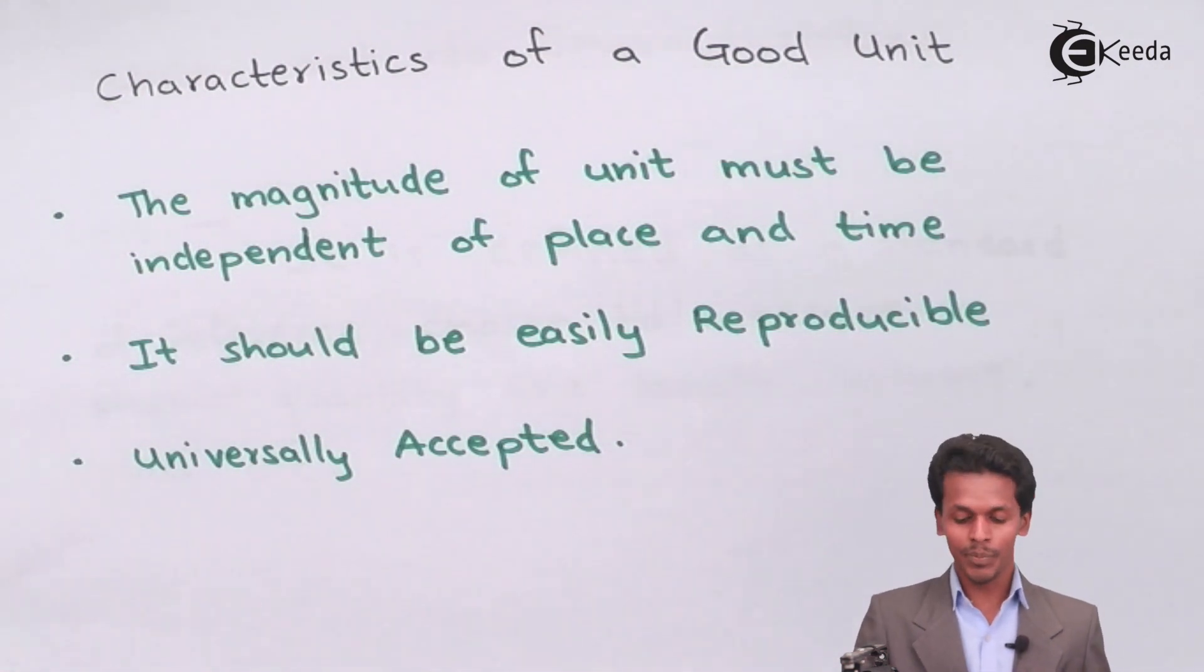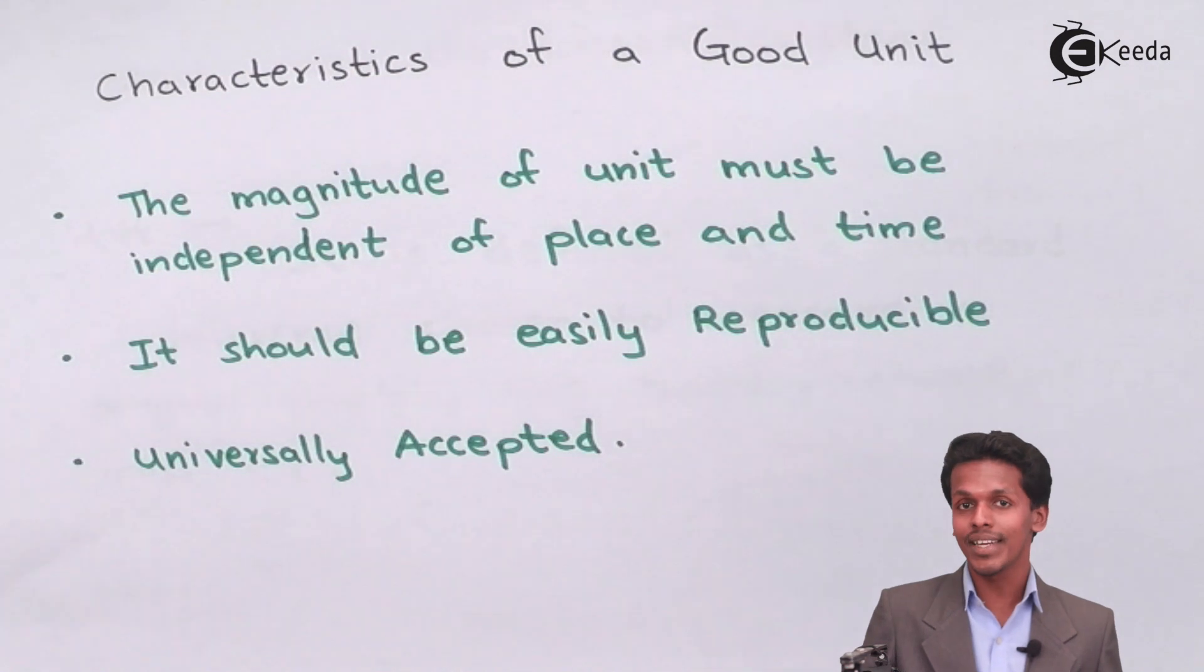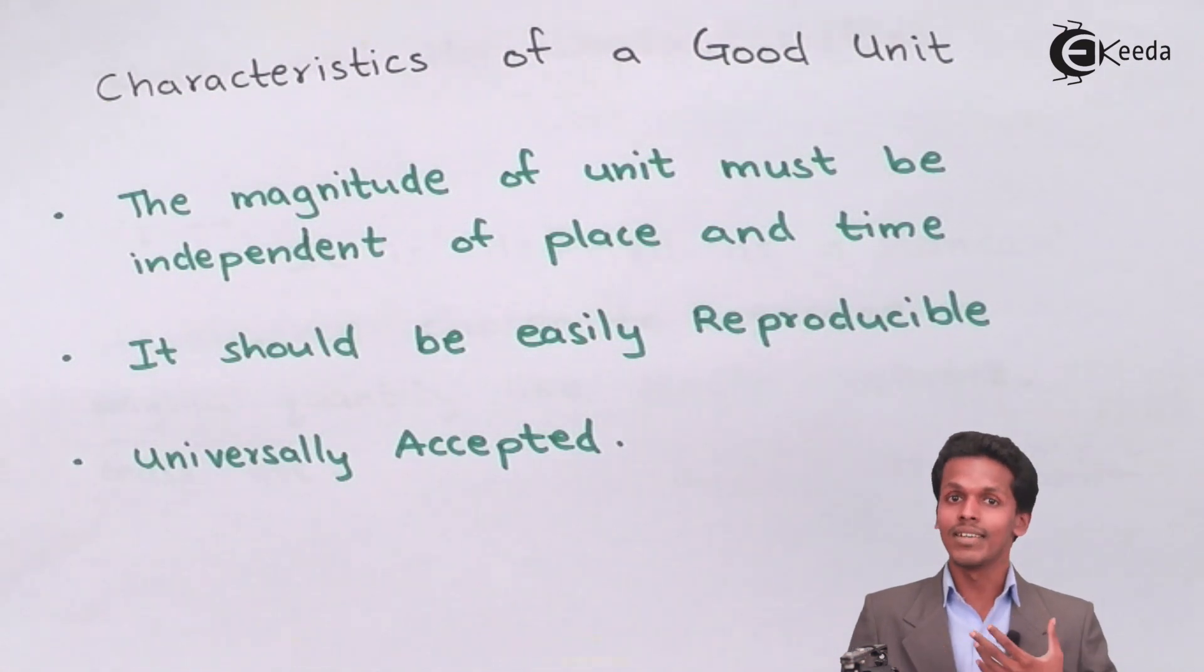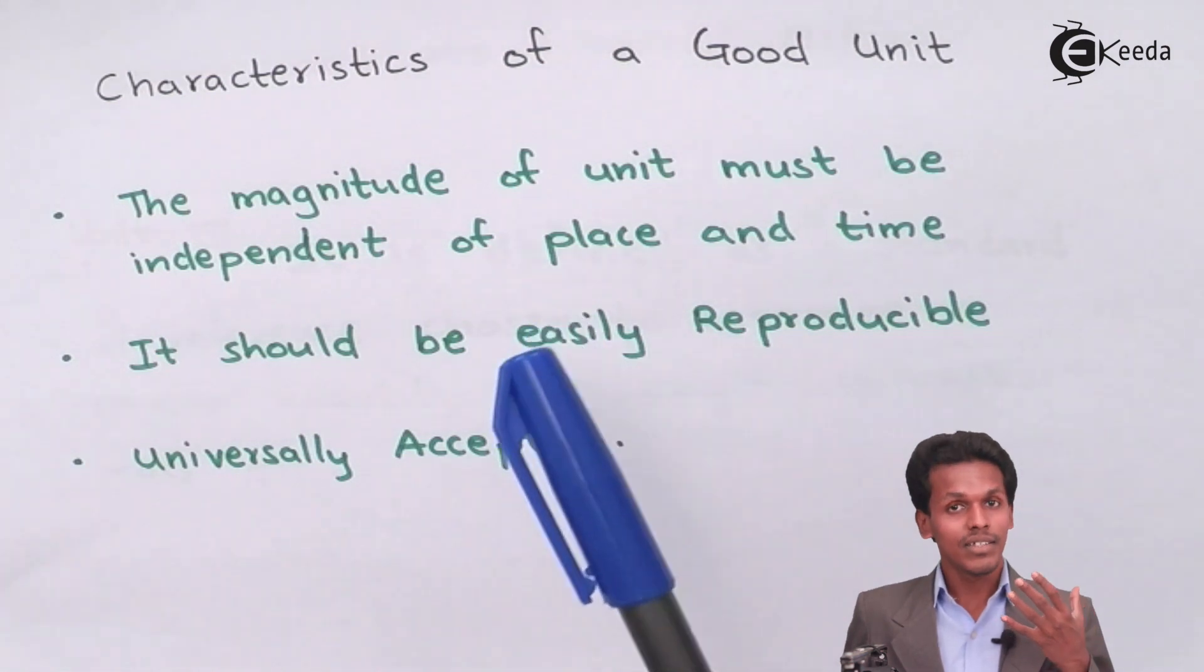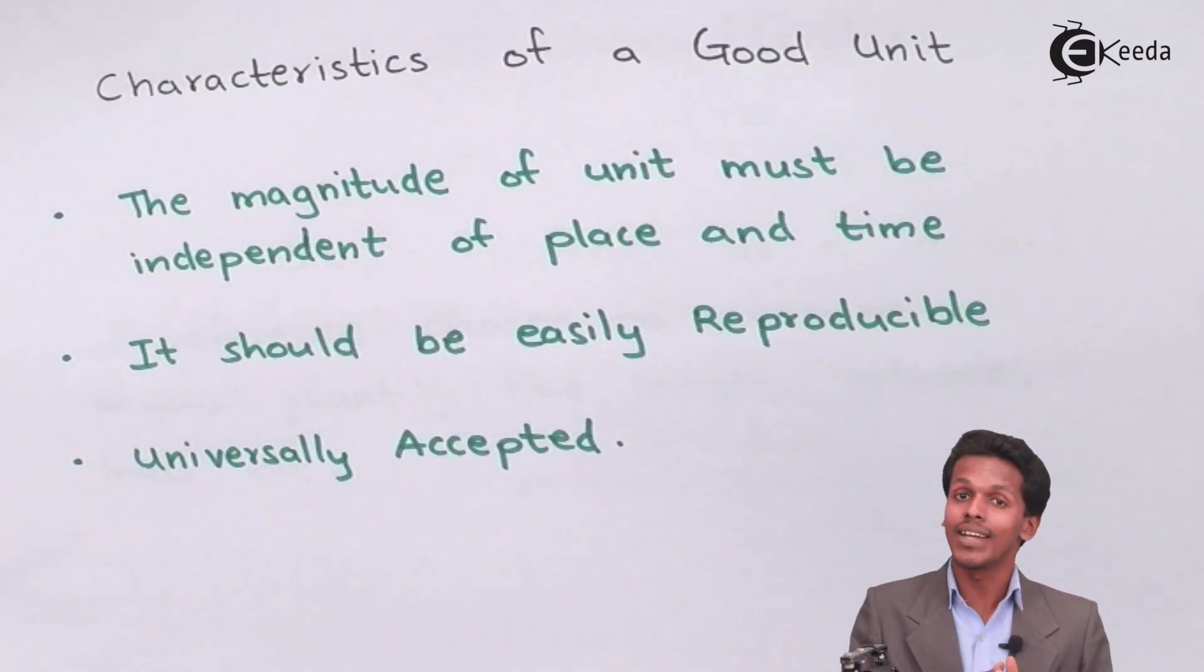And the next thing is it should be universally accepted. The unit that we have been mentioning should be accepted globally because we have to interact with each other and we are dealing with chemical reactions. Chemical reactions are not taking place in our city itself, we are doing chemical reactions globally, so therefore the unit that we are mentioning should be globally accepted. These are the good characteristics of a unit that we should understand.